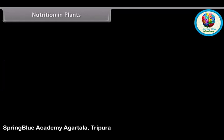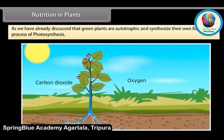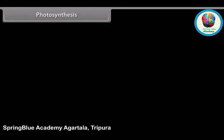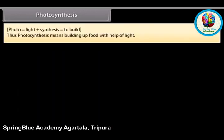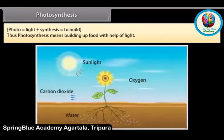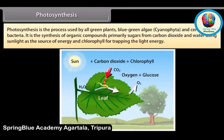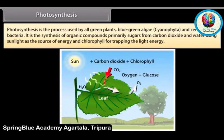Green plants are autotrophic and synthesize their own food by the process of photosynthesis. Photo means light and synthesis means to build, so photosynthesis means building up food with the help of light. Photosynthesis is the process used by all green plants, blue-green algae, Cyanophyta, and certain bacteria. It is the synthesis of organic compounds, primarily sugars, from carbon dioxide and water, using sunlight as the source of energy and chlorophyll for trapping the light energy.